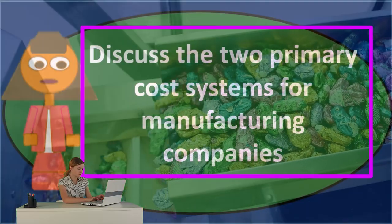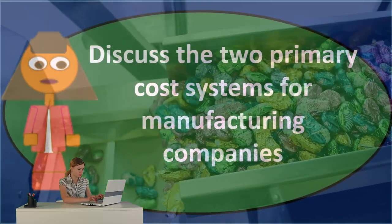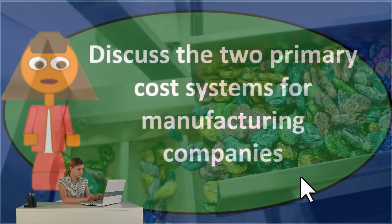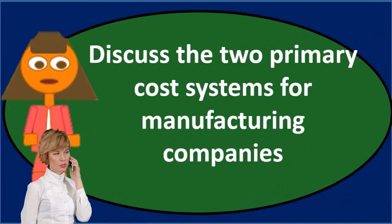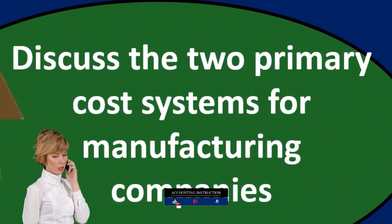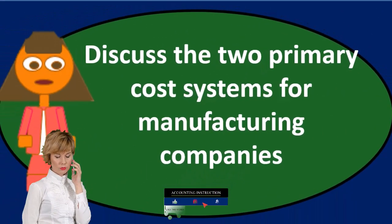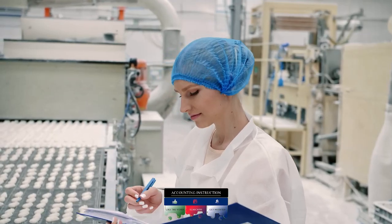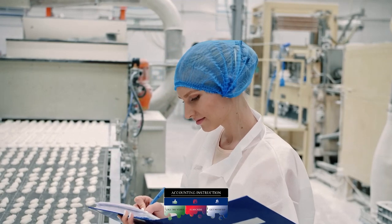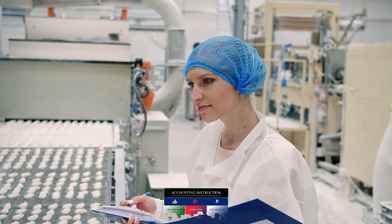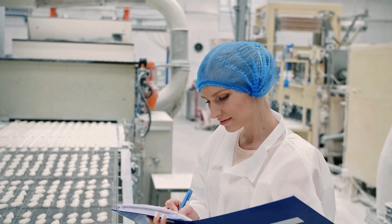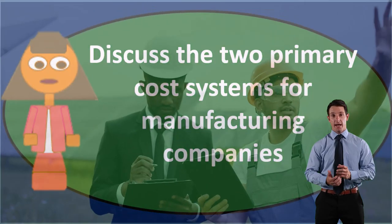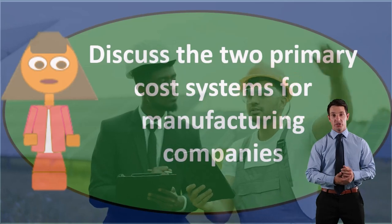We can think through what the cost flow systems would be, and hopefully that will lead us to the two primary forms that the cost flow systems will take. When we think about a manufacturing company, we're thinking about a company that manufactures inventory. That's different than other types of companies — we can contrast that to a merchandising company, which also has inventory but does not make the inventory.